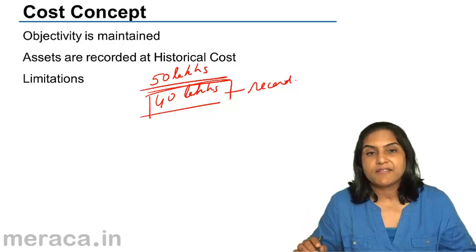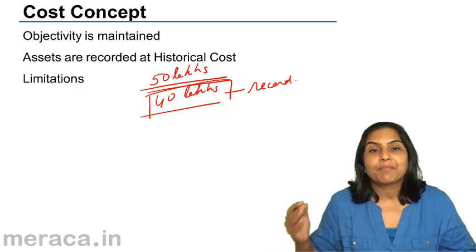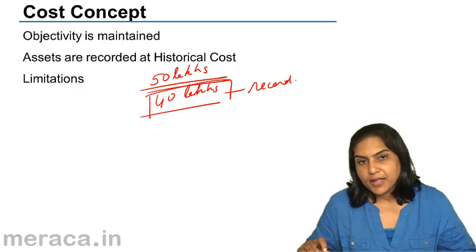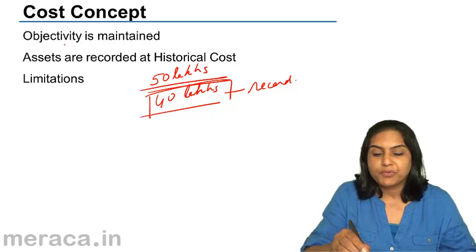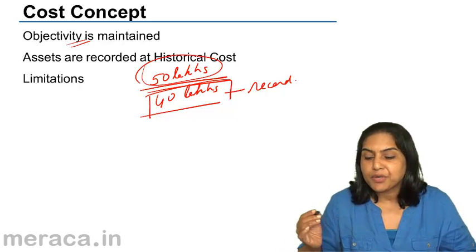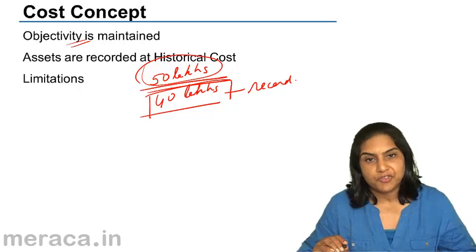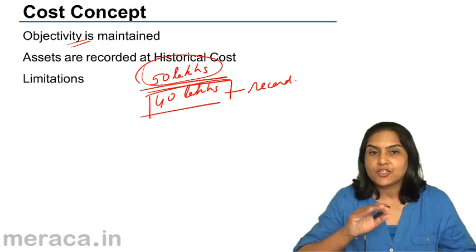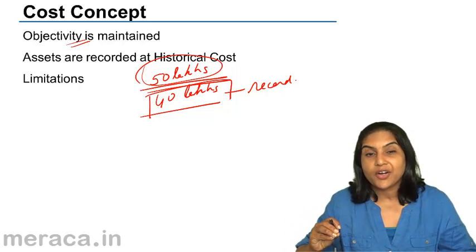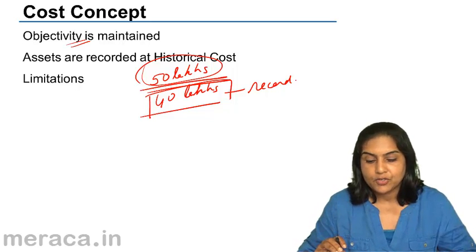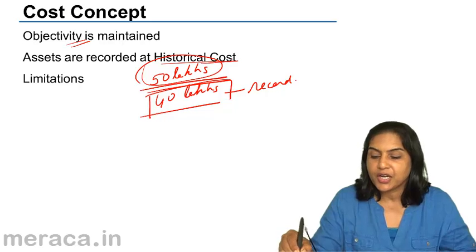It is a different matter that the value of this land is now 50 lakhs, and two or three years from now it may be worth a crore. The advantage is that objectivity is maintained. Because when I say this land is worth 50 lakhs, somebody else may think it is worth 55 lakhs and another person may think it is worth 45 lakhs. But there is no such subjectivity when we always record it at the cost at which we buy. Assets are recorded at historical cost.